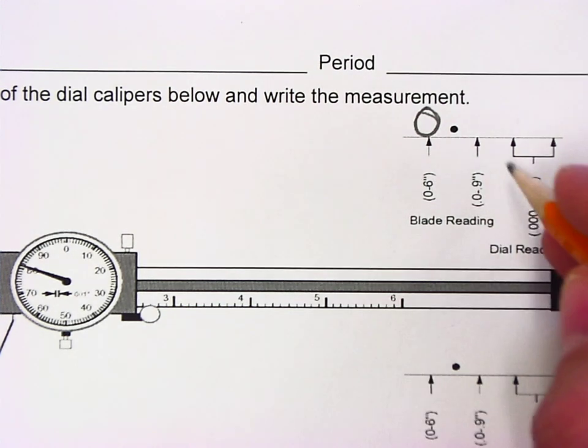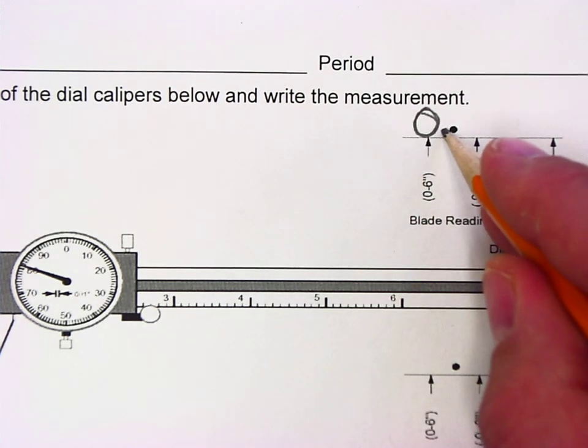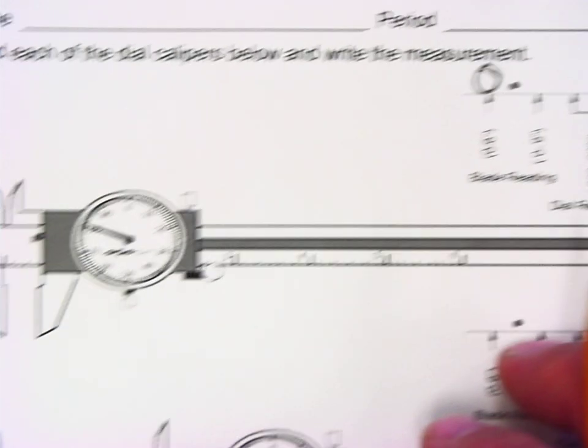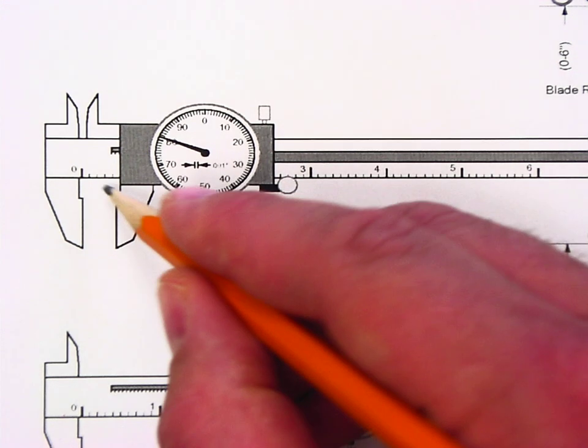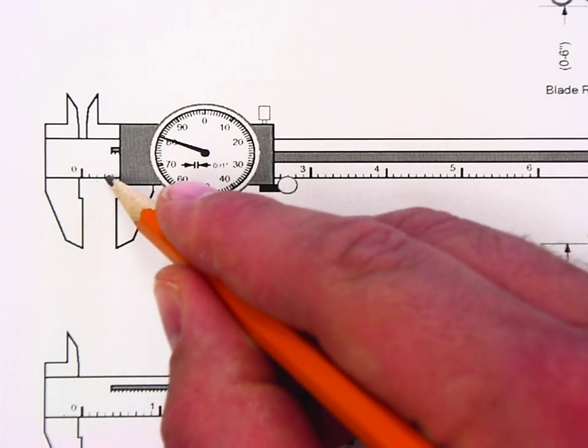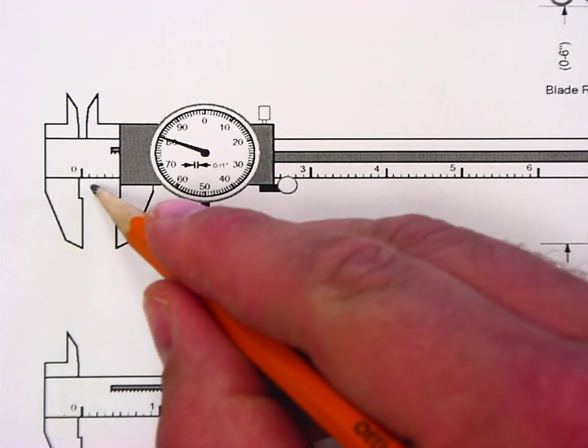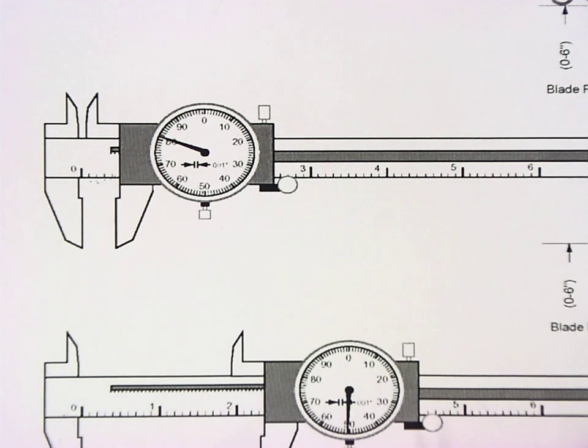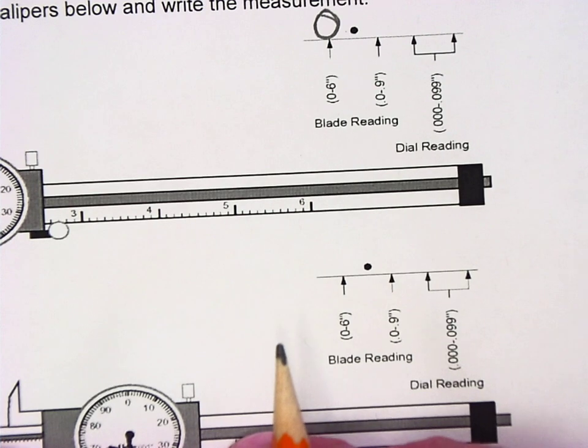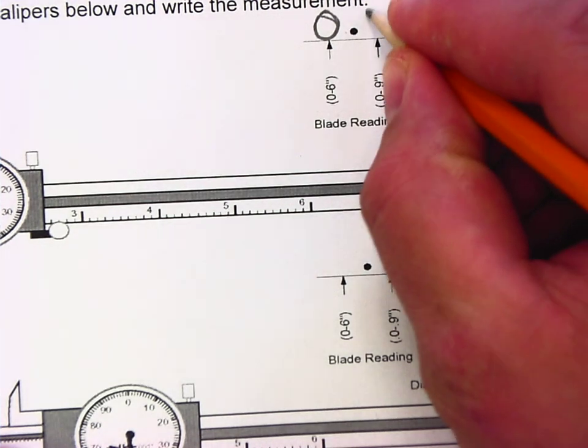The next is to find the tenth. You see the decimal point here. We're now going to go back to the blade. Each inch is broken up into ten segments. These smaller lines represent those segments. So in this case, we're going to count one, two, three, four. There are four visible lines, and we're going to come over and write down four.